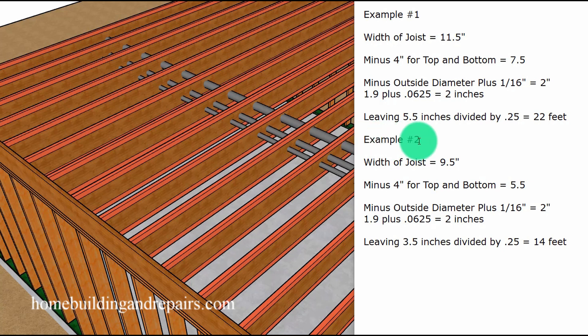So let's get back to example number two. If we have three point five inches left over, we divide 0.25 into 3.5 for a one and a half inch inside diameter pipe. We will have a maximum distance of 14 feet in a floor framed with two by 10 joist.